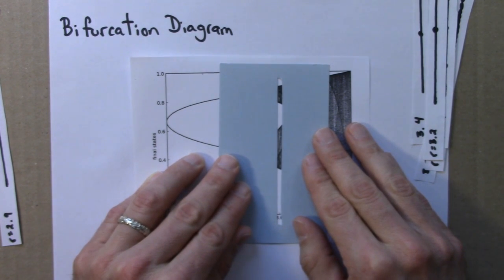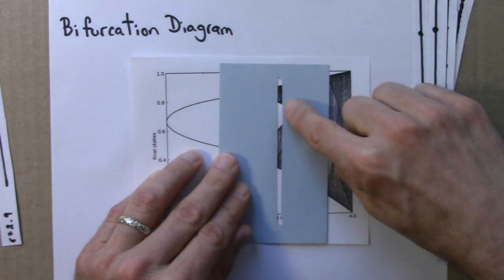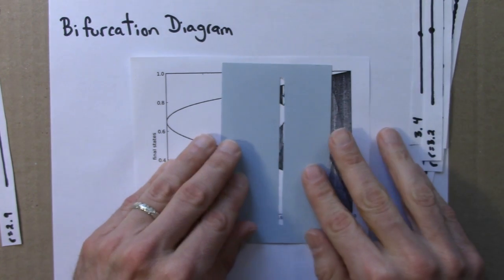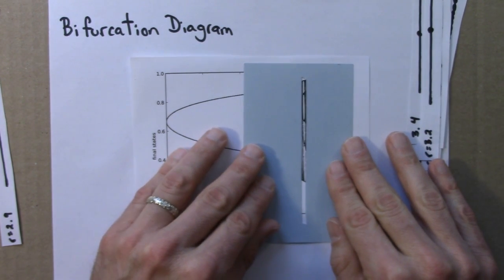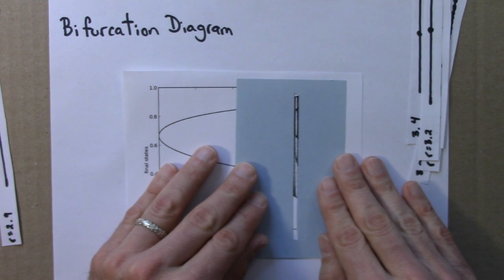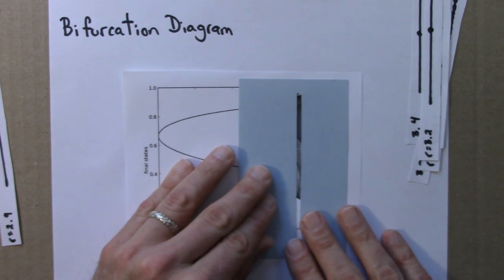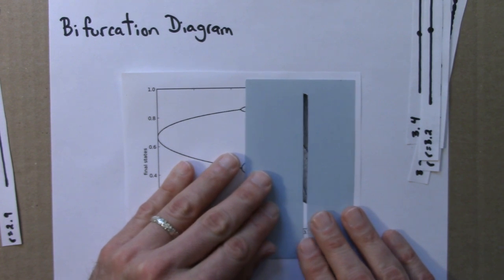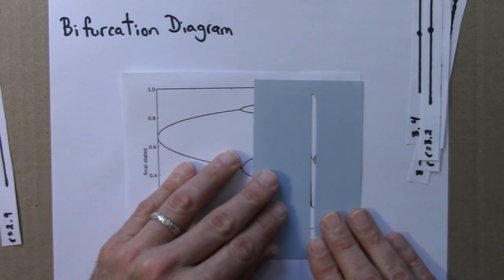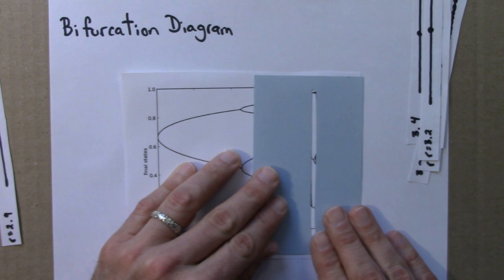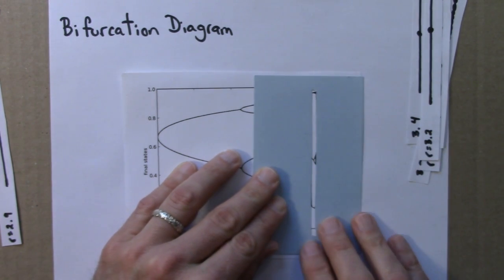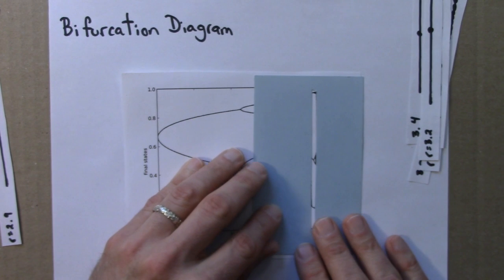Then we have regions of chaos. Here this is aperiodic but with a gap in the middle. This is very narrow but this is the period 5 value we saw before. More aperiodic regions. Here's a period 3 gap. One, two, three. I think we investigated that maybe back in unit 2.